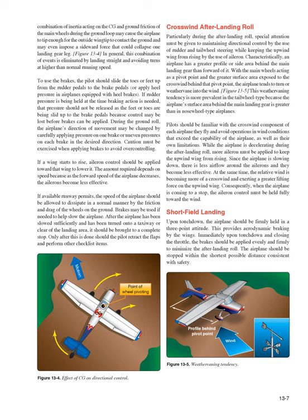As forward speed decreases, ailerons become less effective. If available runway permits, allow speed to dissipate naturally through wheel friction and drag, using brakes only if needed. After the airplane has been slowed sufficiently and turned onto a taxiway or clear of the landing area, bring it to a complete stop. Only after this is done should the pilot retract the flaps and perform other checklist items.